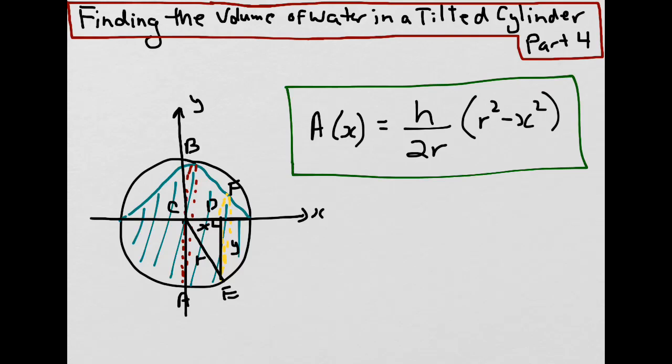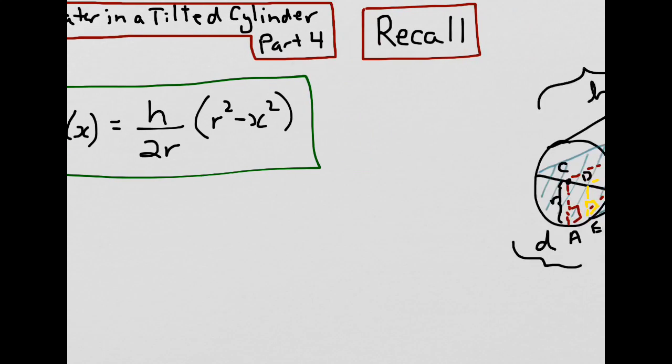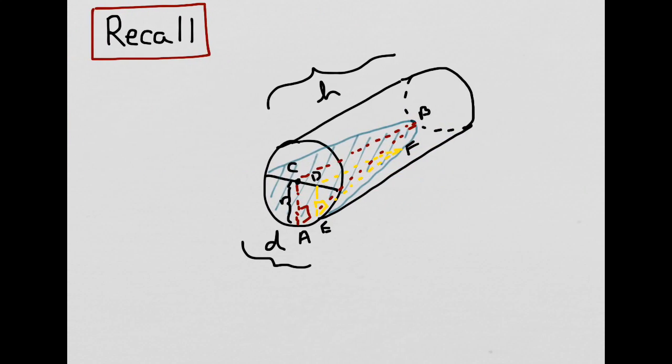The final step is to calculate the volume of water in the cylinder. Recall that we have a tilted glass cylinder such that water fills up to half the base and touches the top lip of the cylinder.